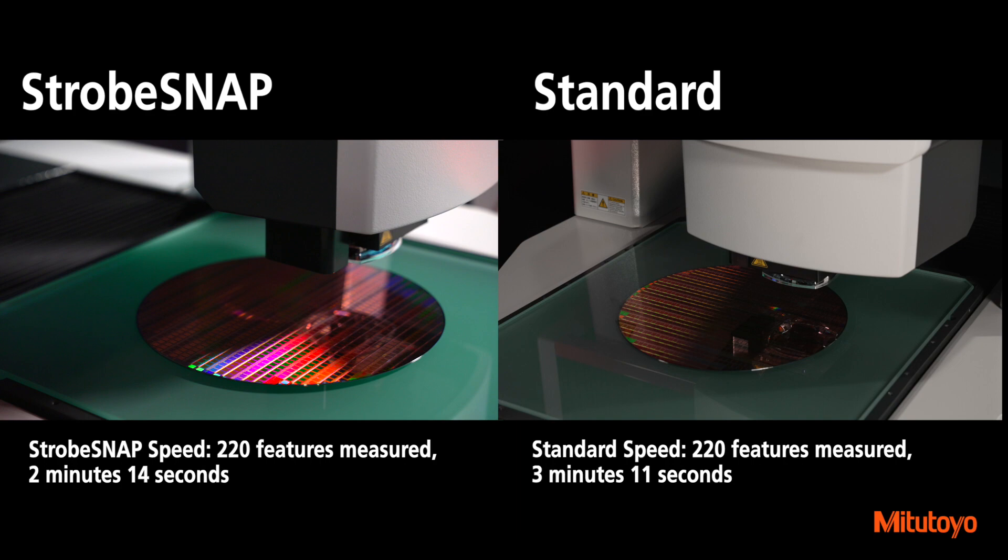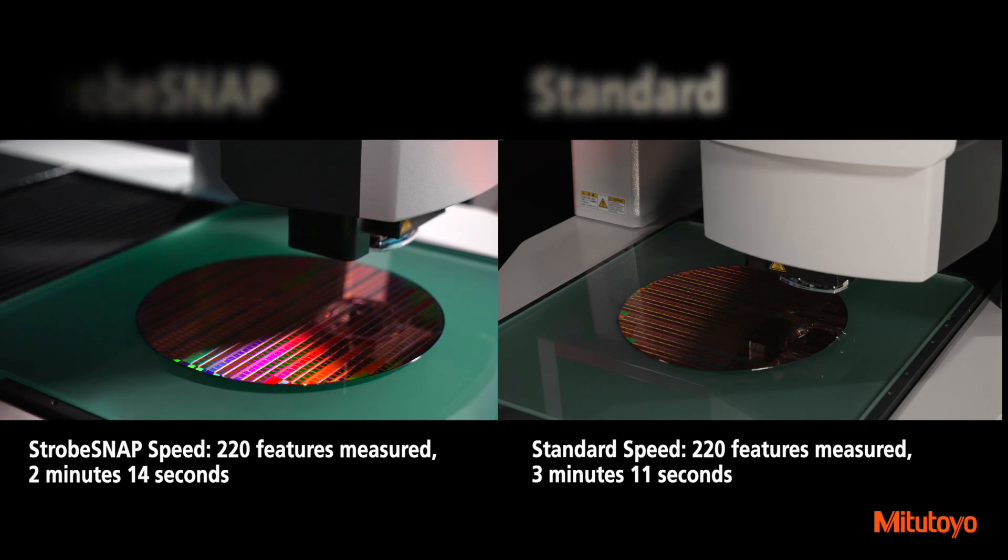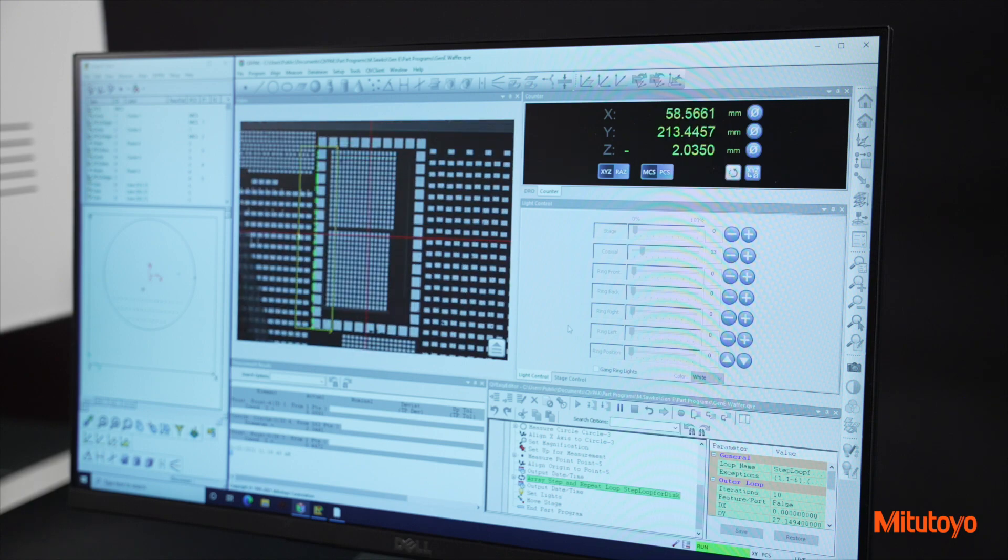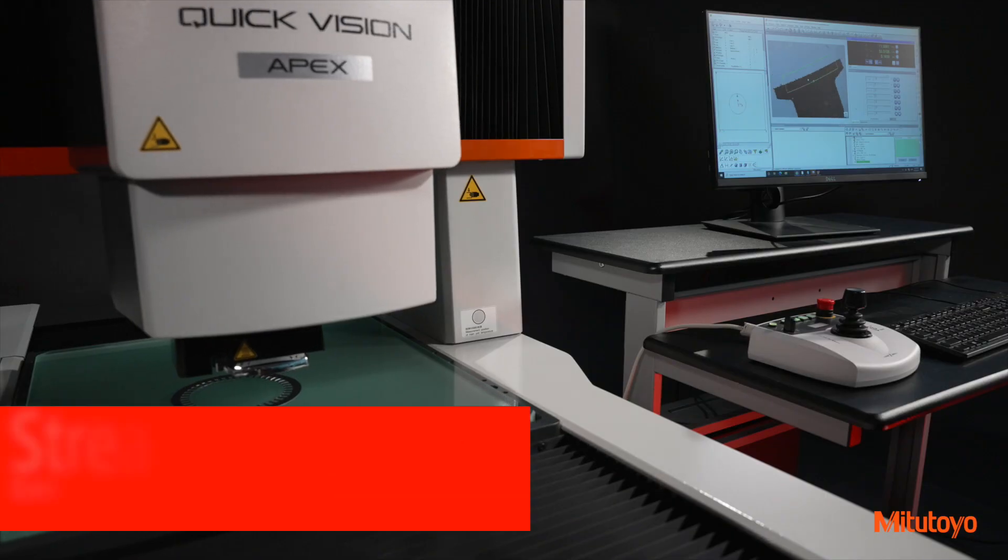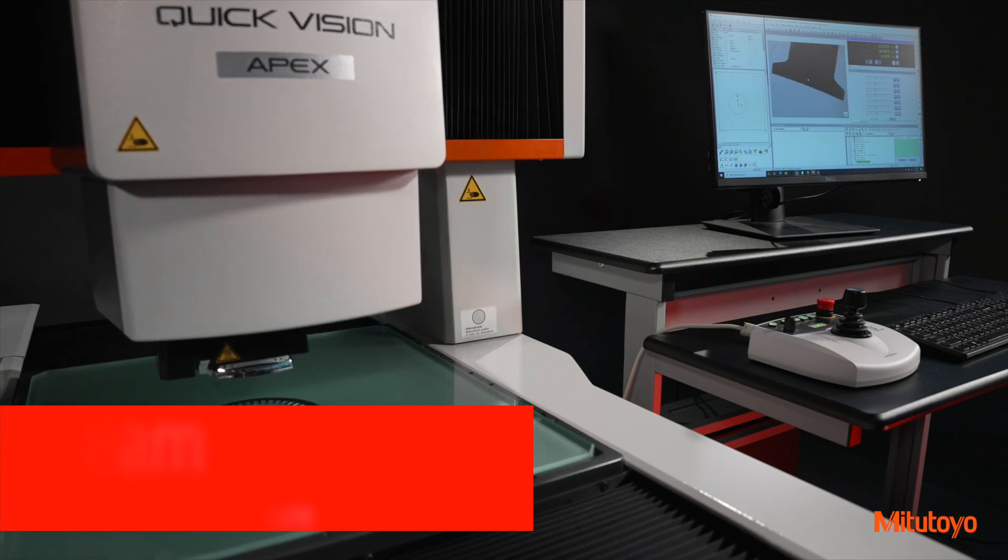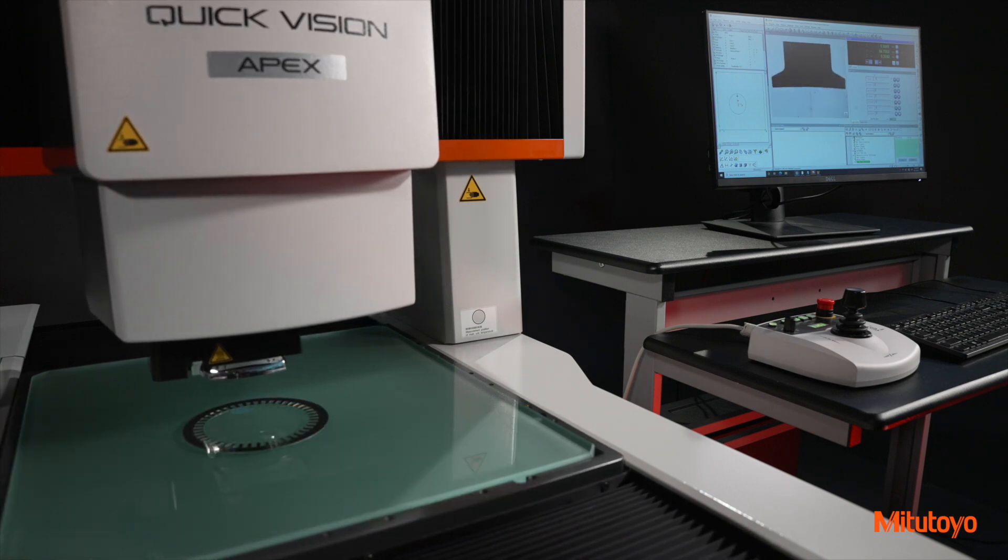These increased speeds are accomplished by pausing very briefly for each feature measurement, compared to much longer pauses with older, more traditional vision machines. Mitsutoyo's stream uses a breakthrough lighting and camera combination to enable continuous vision measurement during stage movement.